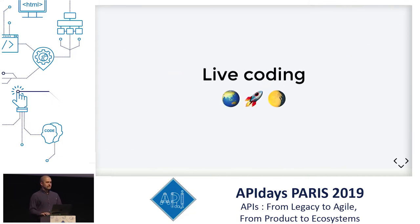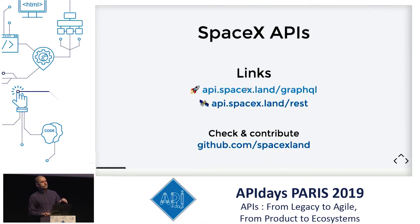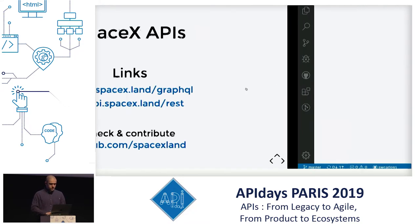We are going to be using the SpaceX GraphQL API — if you like rockets I really recommend you check it out. You can hit the API at api.spacex.land/graphql and you'll also have a REST API which is auto-generated, fully typed and documented from the GraphQL schema. All the repo is on github.com/spacexland.